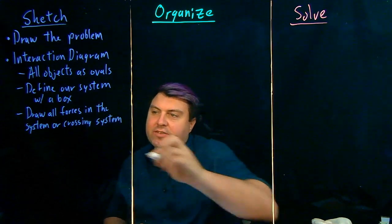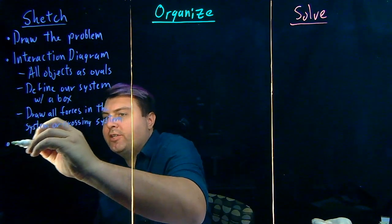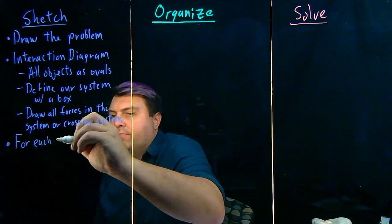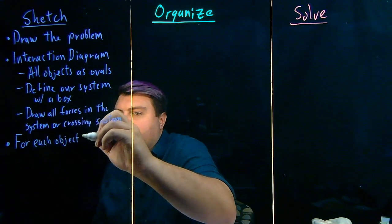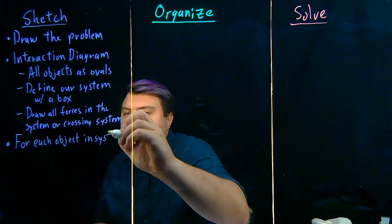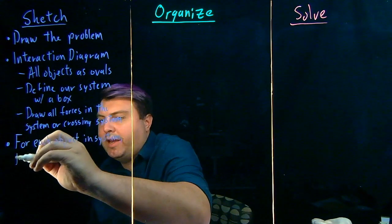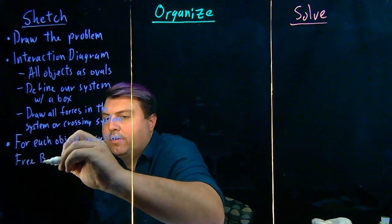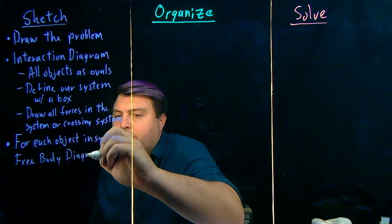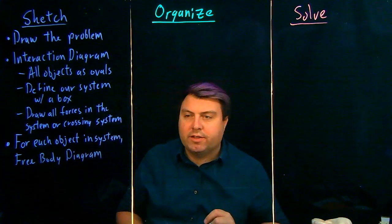We'll see how that helps us out soon. Once we have our interaction diagram, then for each object in the system, we want to write a free body diagram.